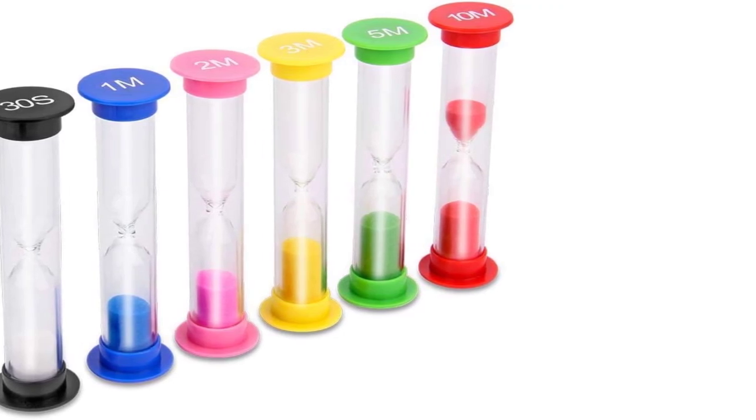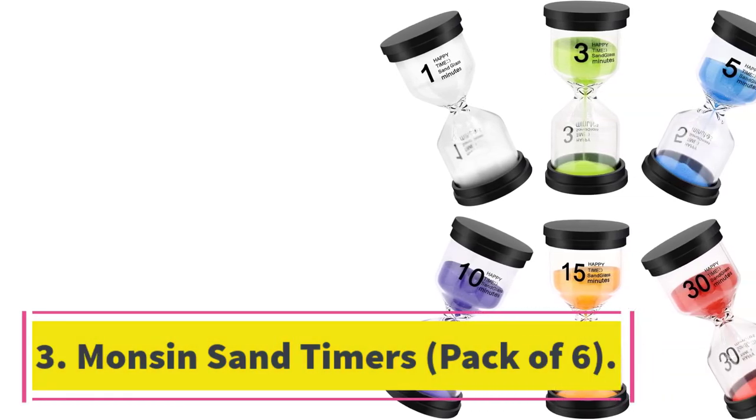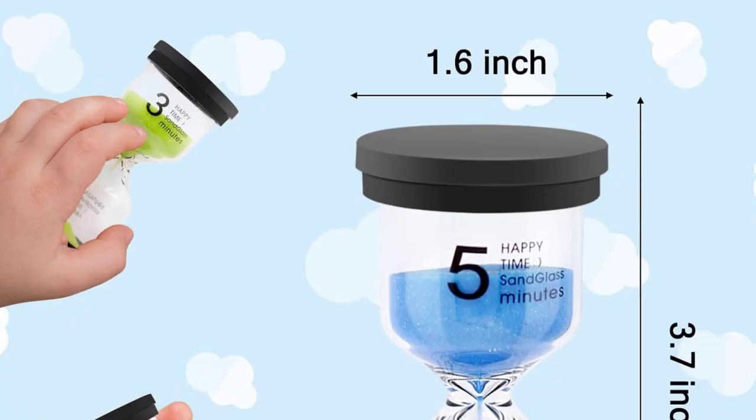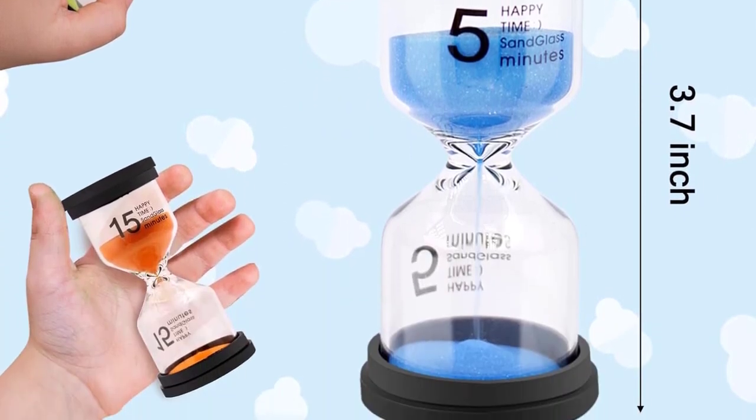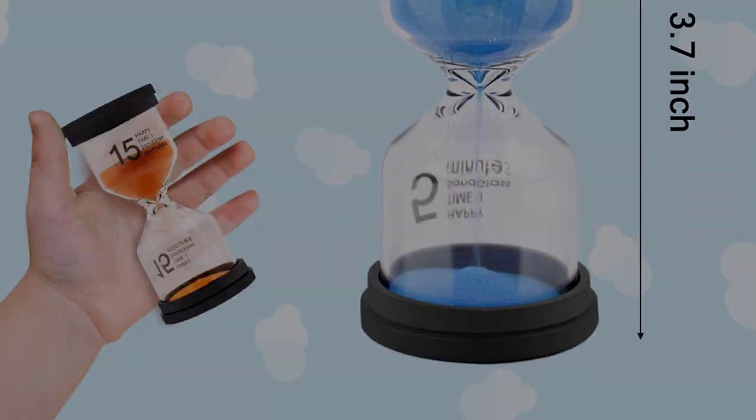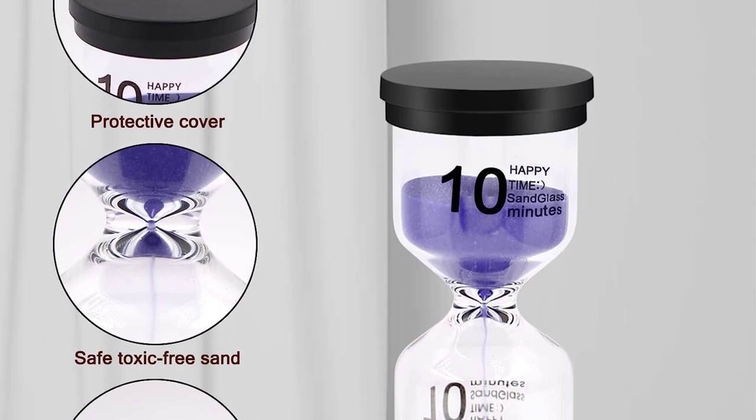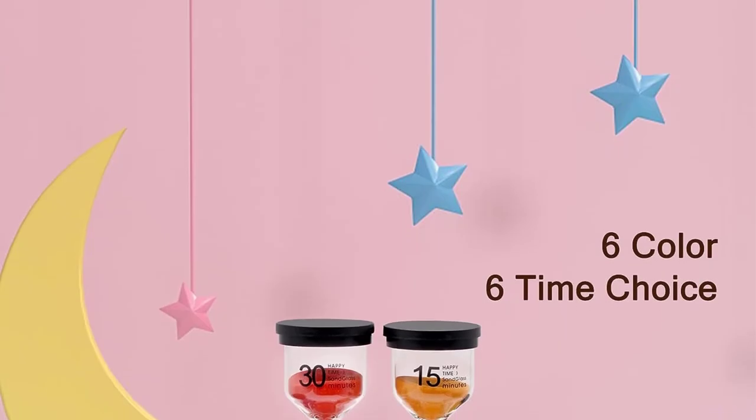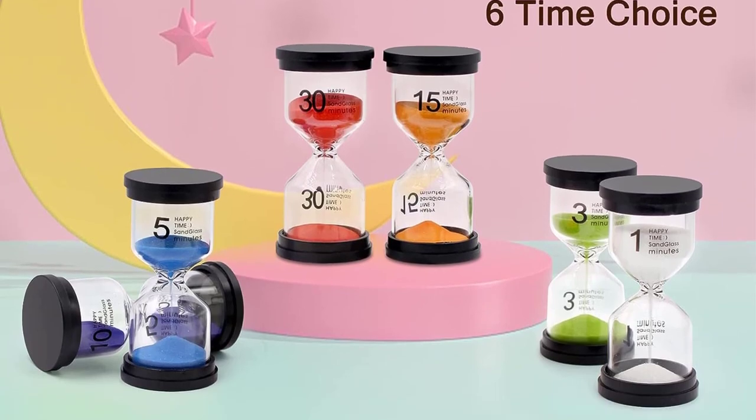Number three: Mons in sand timers pack of six. Keep track of time with these colorful sand timers from Mons in. The set includes six timers, each with a different time setting ranging from one to 30 minutes. Made with durable PVC and high quality borosilicate glass, these timers are built to last and come with a protective cover. The portable size makes them perfect for travel or classroom use, and the visual aid helps with time management and beating procrastination. Ideal for cooking, learning, and psychological training.